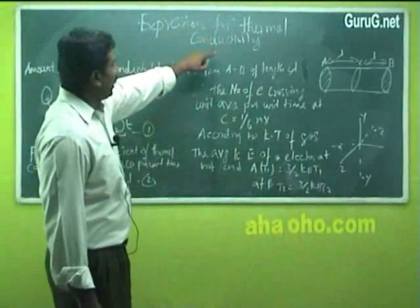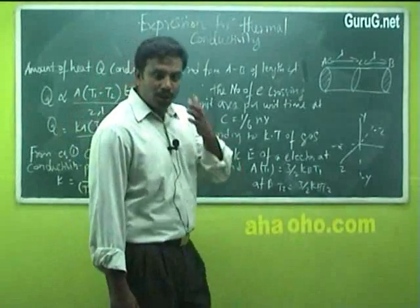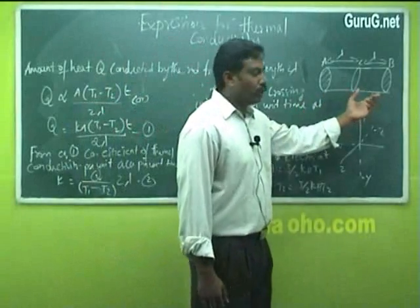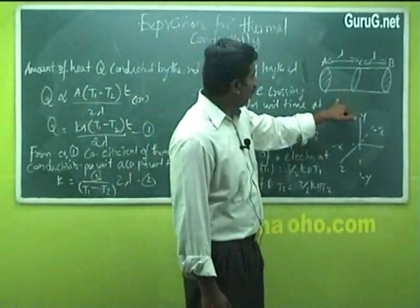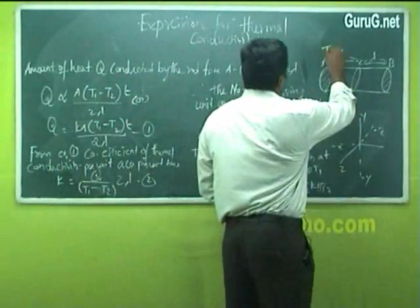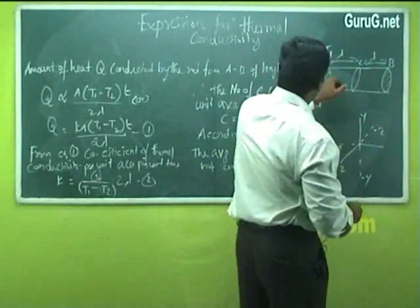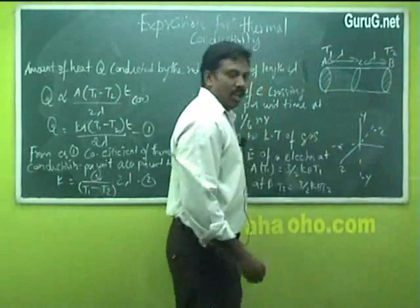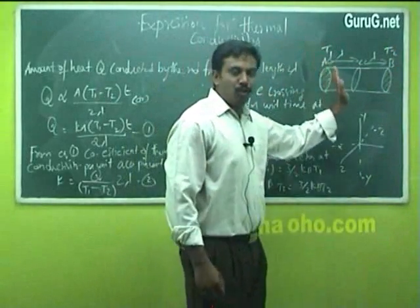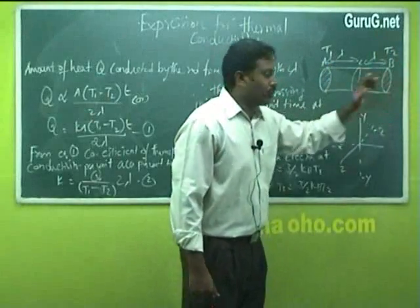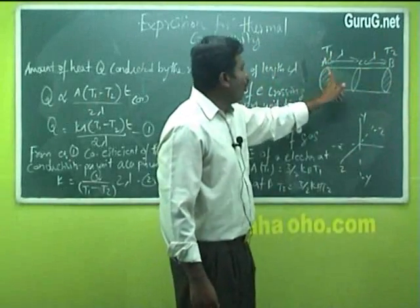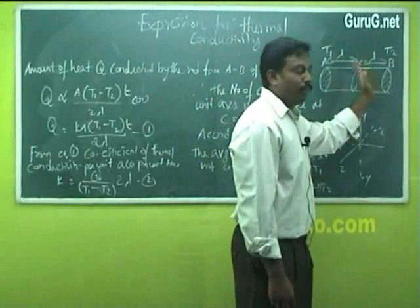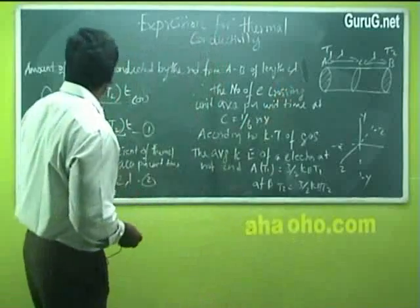Expression for thermal conductivity of metals. To derive the expression for thermal conductivity of metals, let us consider a circular rod where A is the hot junction and B is the cold junction. At A, the temperature is T1, and at B, the temperature is T2. Heat flows from a body of higher temperature to lower temperature, so heat flows from A to B. Let 2λ be the length of the rod.